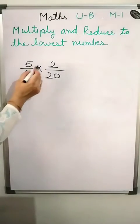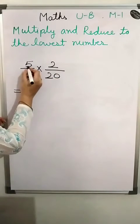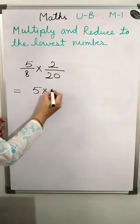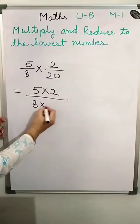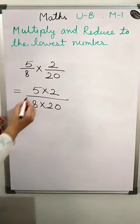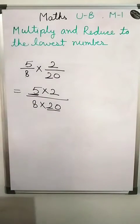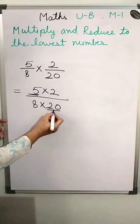Next question: 5/8 multiplied by 2/20. We multiply numerator to numerator and denominator to denominator. Before that, check if anything can be reduced. Look at 5 and 20 — 20 is a multiple of 5.